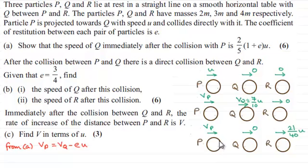And for part C now, we're told that immediately after the collision between Q and R, that's this one here, the rate of increase of the distance between P and R is V. And we've now got to find V in terms of u for three marks. So if you'd like to have a go at this one, just give you a moment to pause the video. And when you come back, you can check your work solution against mine.